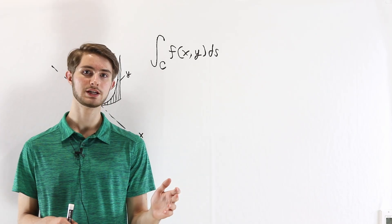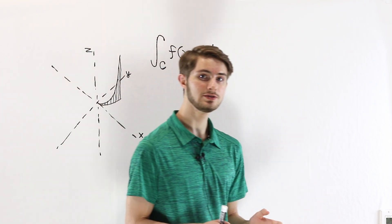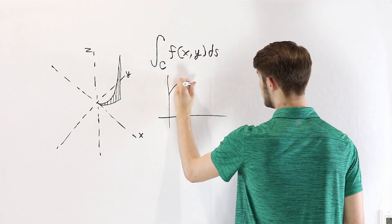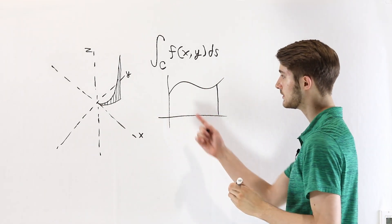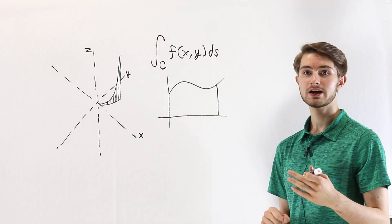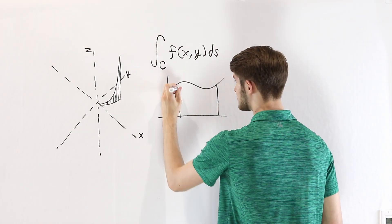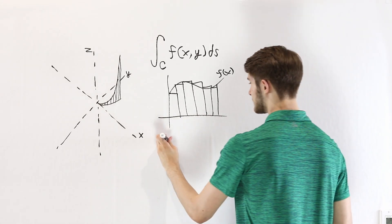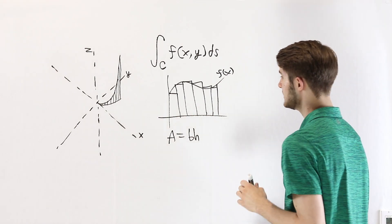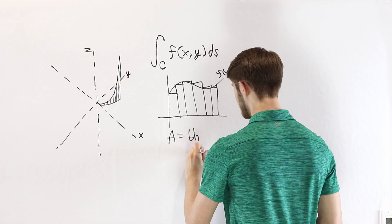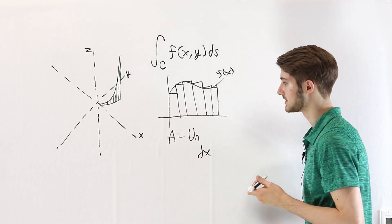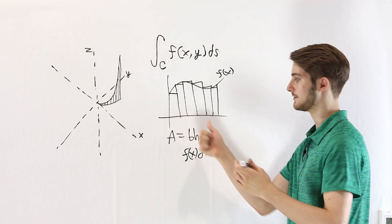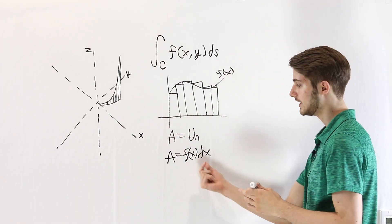Now that we can visualize what a line integral is, we need to think about how to actually compute it — again by comparing it to an ordinary one-dimensional integral. When we did ordinary one-dimensional integrals, we wanted to find the area under a curve, so we started by taking a Riemann sum: adding up the areas of a bunch of rectangles. The area of one rectangle is base times height, where the base equals dx and the height is the value of the function at a particular x.